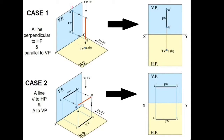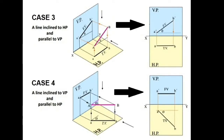In case number three, the line is parallel to the vertical plane but inclined to the horizontal plane, making an angle theta with HP. In the front view, you see the inclined line at its true length — the same length as the actual line. In the top view, the line appears shortened and is not the actual length. In the projection, you have a line inclined at angle theta to the XY line representing the front view, and the top view is parallel to the XY line showing the apparent length of the line.